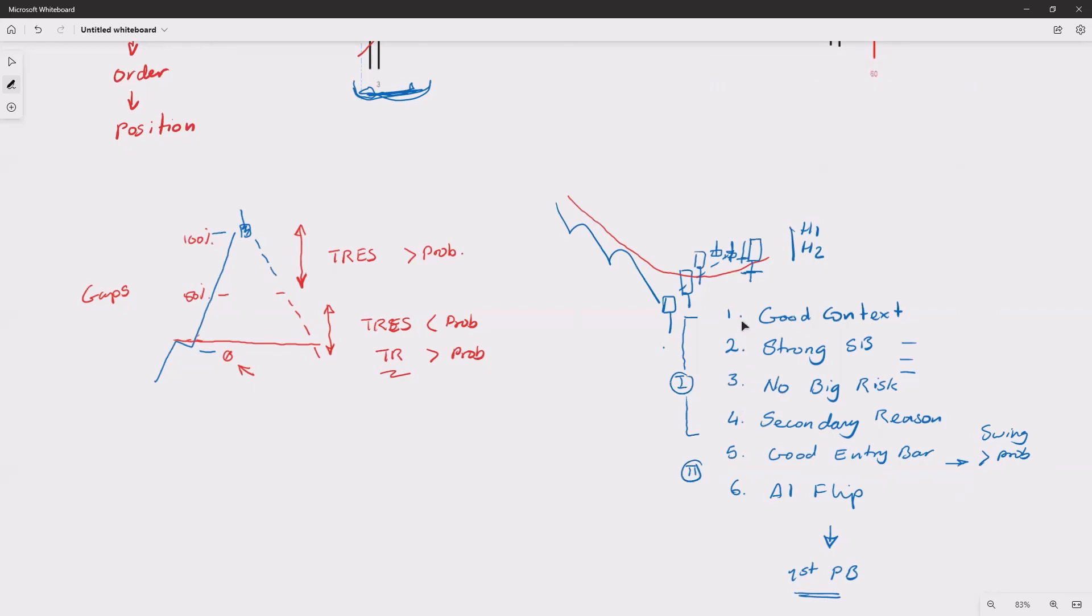So you need a graceful reversal that has all of these components: good context, strong signal bar, not forcing you to take big risks. Let's say there is one more thing here—just to save time we're going to squeeze it here. So this is going to be seven. There is a six here: non-climactic move.